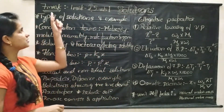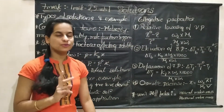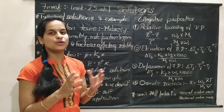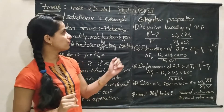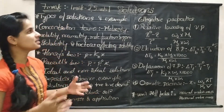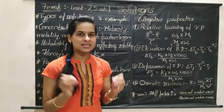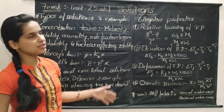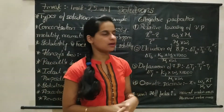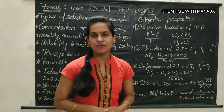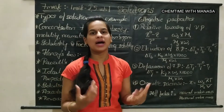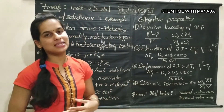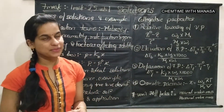Friends, this chapter carries totally 7 marks. Two 1-mark questions and one 5-mark question will be asked from this chapter, totally 7 marks from the solution chapter. Please remember one thing: this marks distribution list is for only Karnataka students. All the important topics or important formulae from this chapter are useful for CBSE students and students from any other state also, but this marks distribution list is for only Karnataka students.